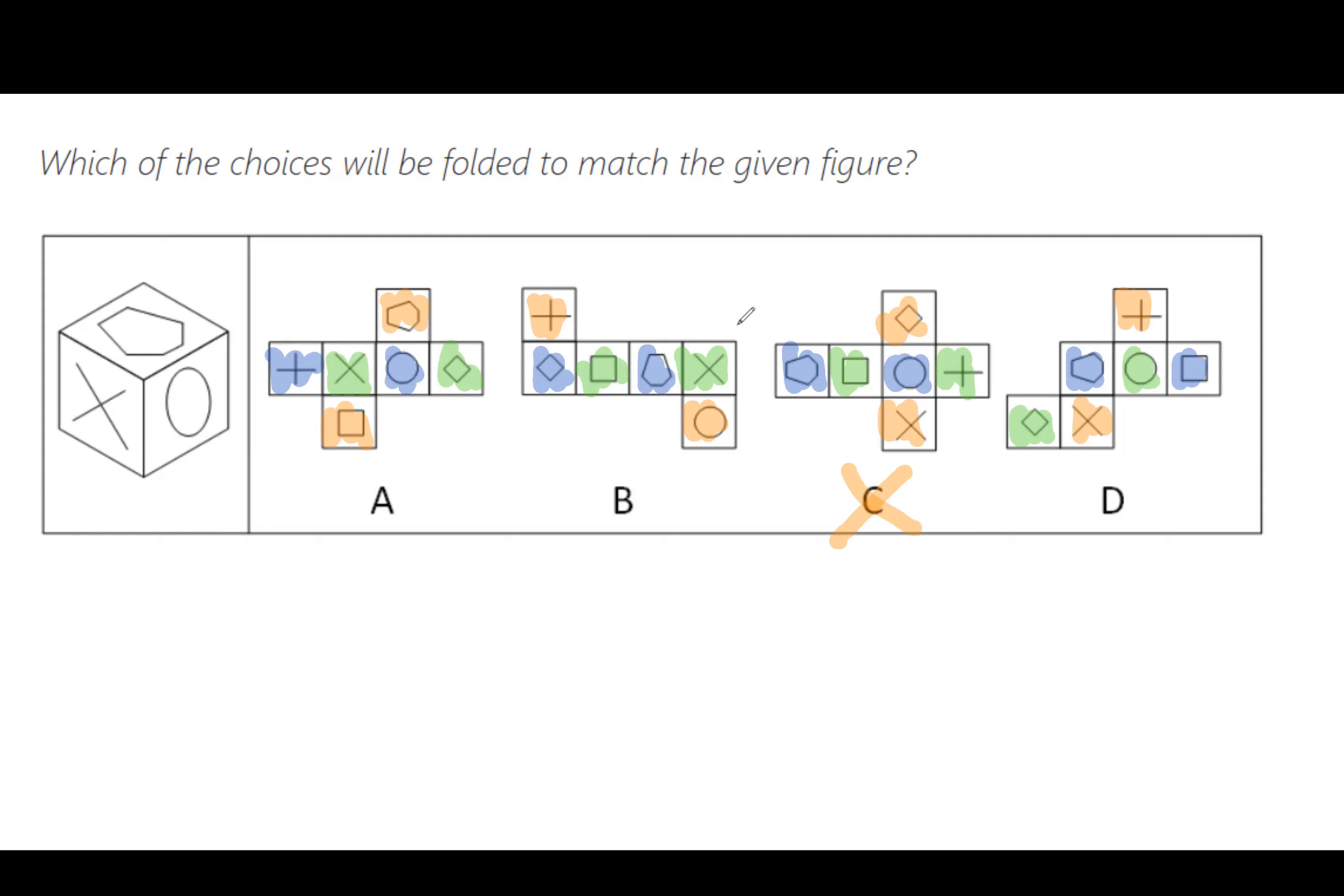So if we look at the three shapes here and go clockwise from the hexagon again, it goes hexagon, cross, circle. But remember over here it was hexagon, circle, cross. So that's in the wrong order. So it's not B.